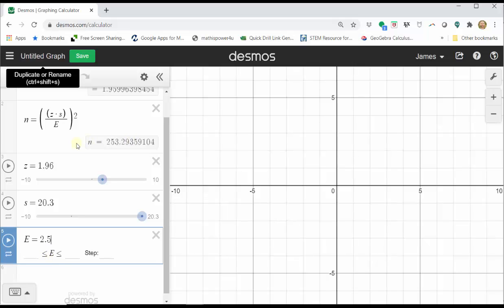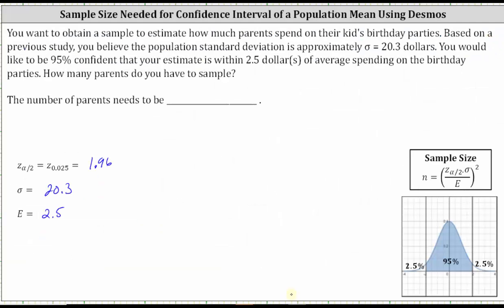We always round n up and never round n down. If you round it down to 253, the sample size would not be large enough. We round up to 254. We now know the sample size needs to be 254.